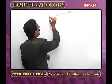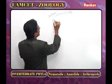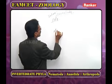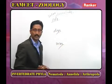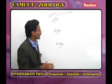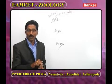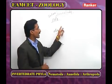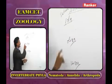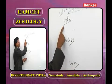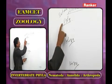Phylum Annelida is classified into three classes based on the presence of setae: Polychaeta, Oligochaeta, and Hirudinea. From the MCQ perspective, Archi-Annelida is also a class but is not discussed separately. The biggest class is Polychaeta, the second biggest is Oligochaeta.